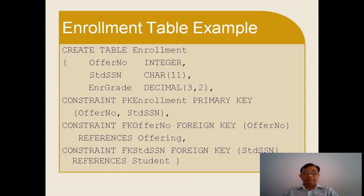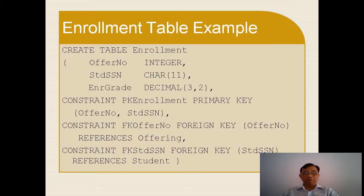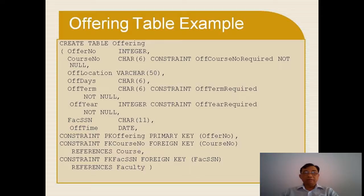Now I go to an example of the CREATE TABLE Enrollment statement. I have the field offer number, and I have three constraints: the first is a primary key constraint based on the composition of offer number and student social serial number. Then I have another constraint on offer number as a foreign key, and another constraint based on foreign key for student social serial number.